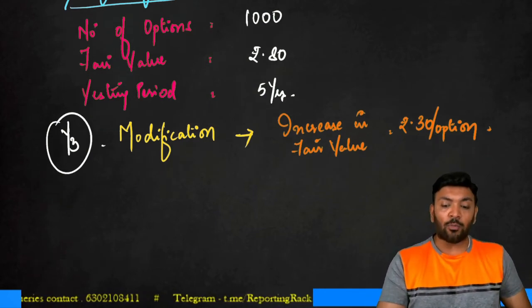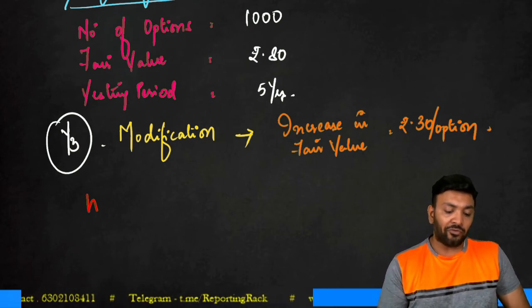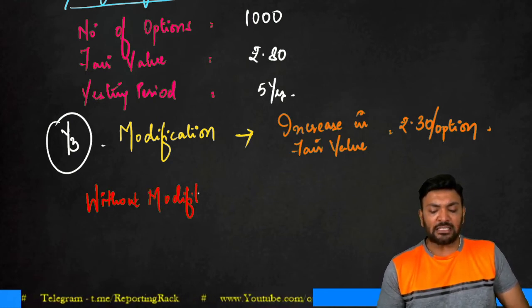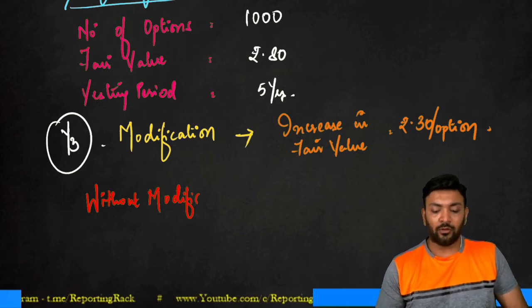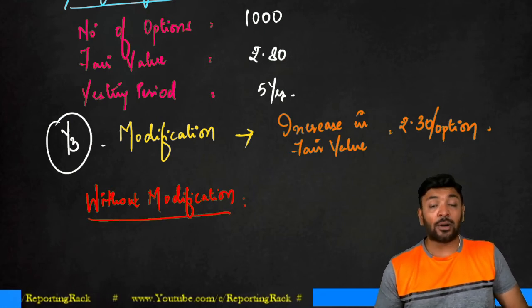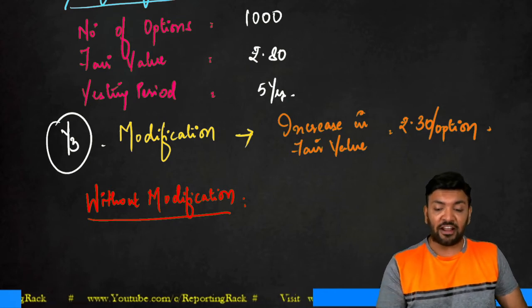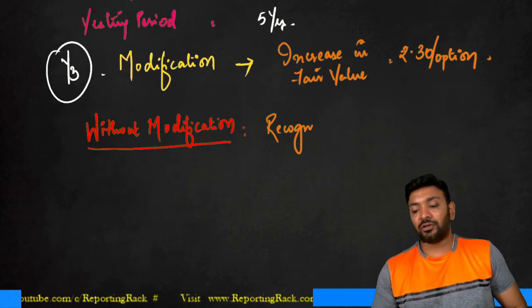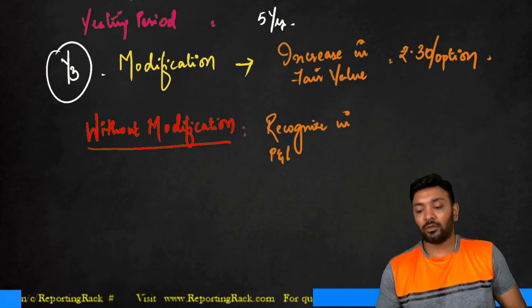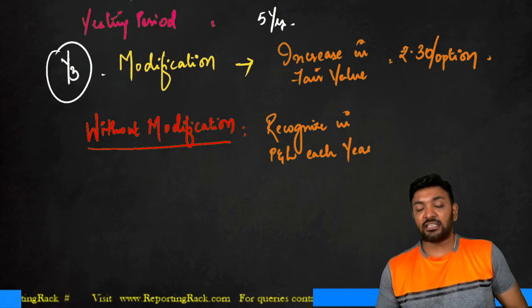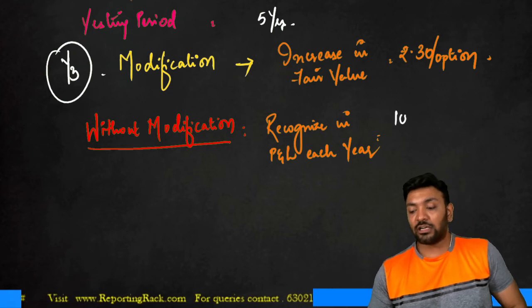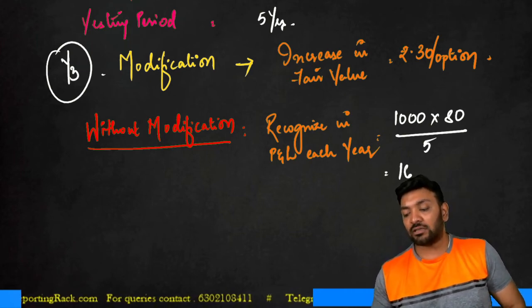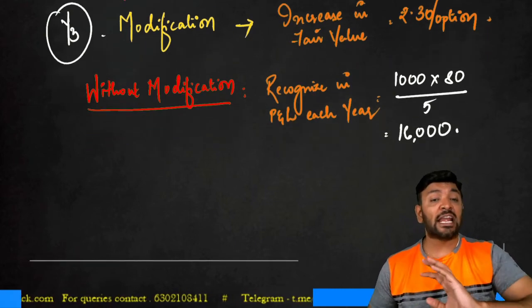First, forget about the modification — without any modification, 80 rupees is the fair value of the option. Therefore, each year I should recognize: 1,000 options × 80 rupees ÷ 5 years = 16,000 to be recognized in P&L each year. This base amount of 16,000 per year will not change even after the modification.